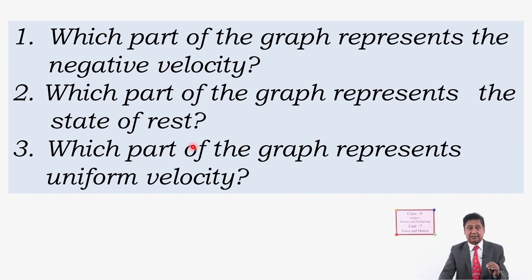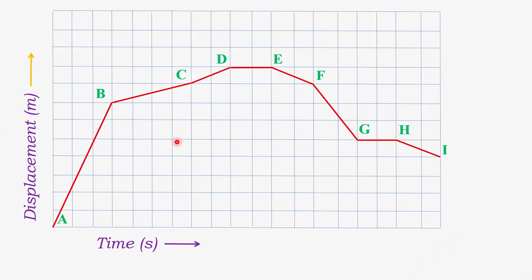Which part of the graph represents the state of rest? Rest means a straight line parallel to the x-axis. Looking at the graph, D-E is parallel to the x-axis. Similarly, G-H is also parallel to the x-axis. Therefore D-E and G-H represent the body at rest.